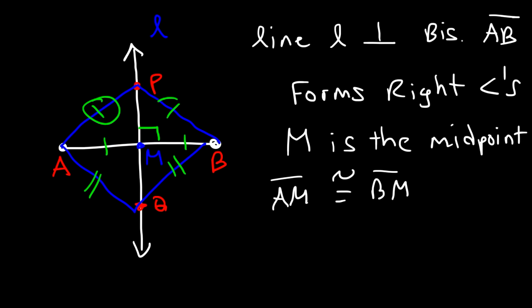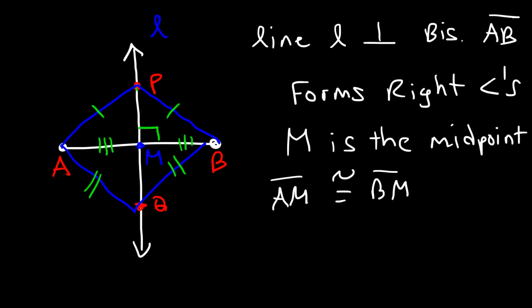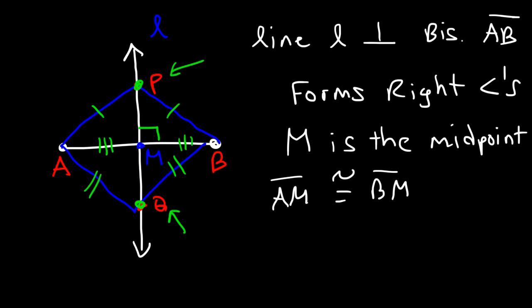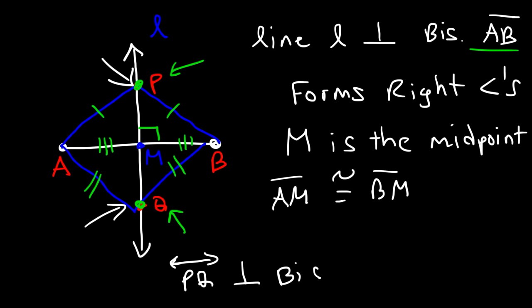As you can see, this side is congruent to that side, and this side is congruent to this side. The two triangles share a common side, which is equivalent based on the reflexive property. So by the SSS postulate, you can prove that these two triangles are congruent. If you can show that these two points are equidistant to the endpoints of the segment, then those two points form the perpendicular bisector of segment AB. To prove a line is the perpendicular bisector, you have to show the two points are equidistant to A and B — therefore, line PQ is the perpendicular bisector of segment AB.